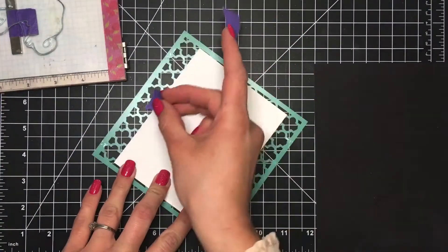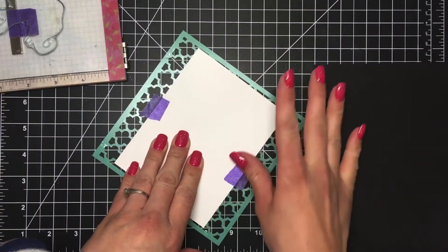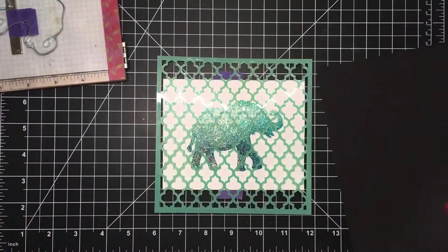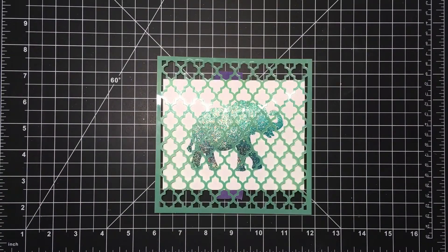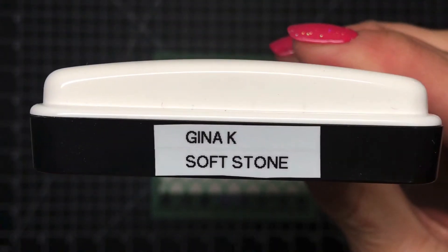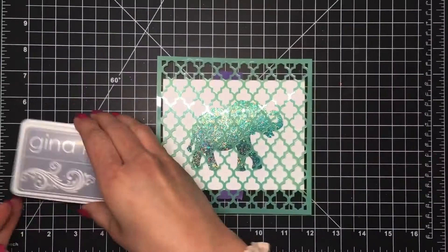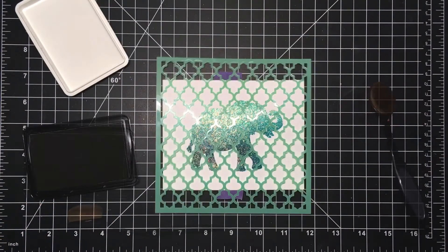I've got a stencil here, I'm not sure who it's from, I think it's Heidi Swapp but I'm not positive on that. I will be using some Gina K soft stone ink and a blender brush to blend around the edges of that card panel, not going onto the elephant so that it's got more of a white center around it.